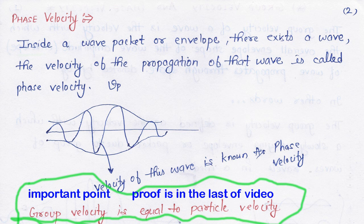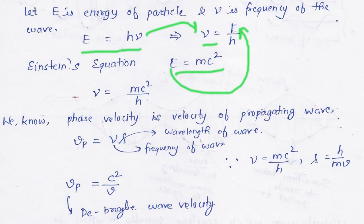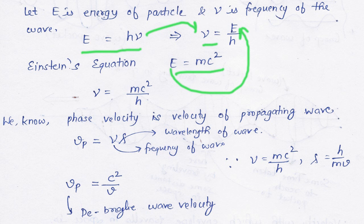Group velocity is the velocity of the particle that shows wave nature. Let E be the energy of the particle and nu be the frequency of the wave. E equals h times nu. If we use Einstein's equation, E equals mc squared, then nu equals mc squared divided by h.